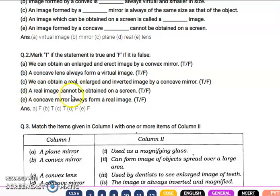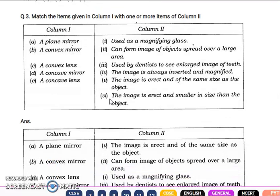Next part is a real image cannot be obtained on a screen - no, real image can be obtained, so this is false. Next is a concave mirror always forms a real image - no, concave mirror can form virtual image too, so this is false. These are your true false. Now match the column.